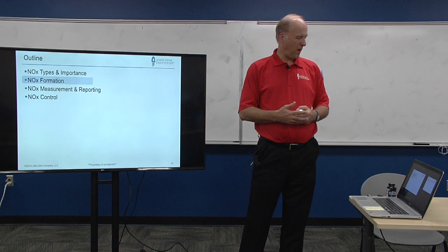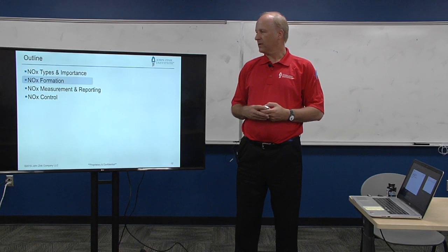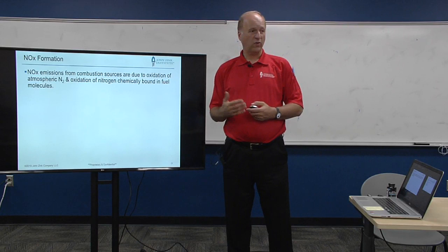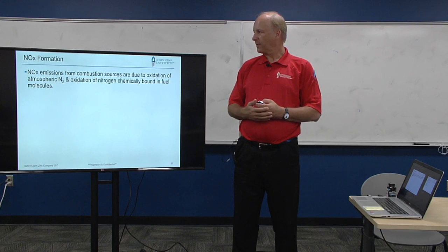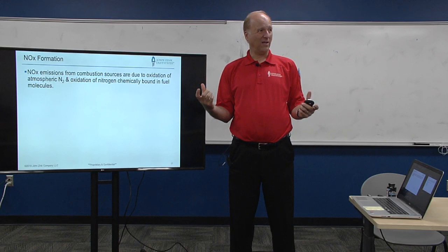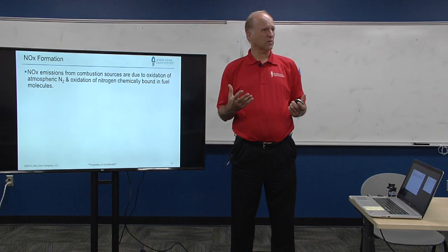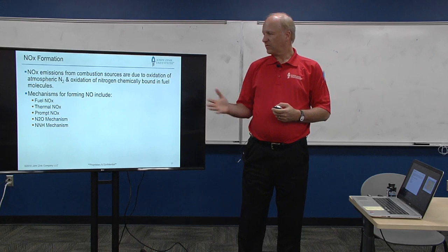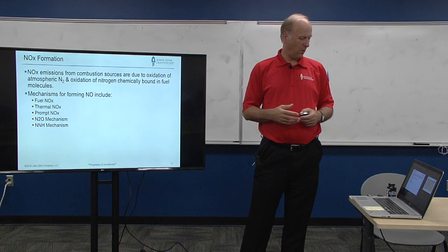Let's talk briefly about how NOx forms. The regulators honestly don't care how it's formed — they just want to know how much is coming out. But if we understand how it forms, we can control it better. NOx emissions are primarily due to oxidation of atmospheric nitrogen. If you have organically bound nitrogen in your fuel, that's a more complicated process, but most NOx is generally made by N2 and O2 at higher temperatures reacting to form NOx. There are more than three kinds of NOx, but the first three mechanisms are the most important for typical combustion processes, and the other two are for more specialized processes.